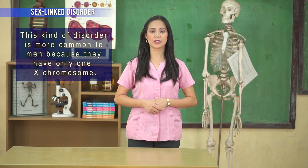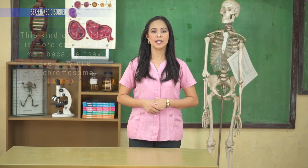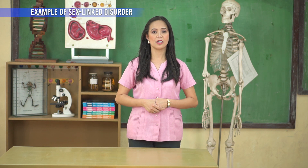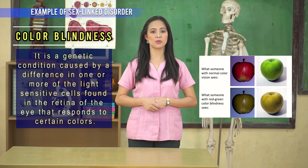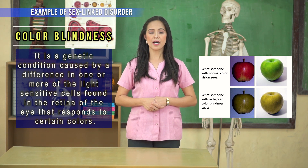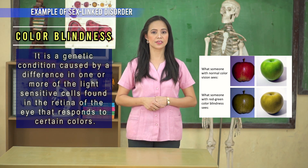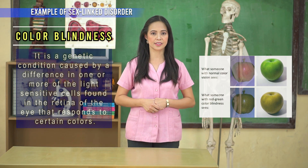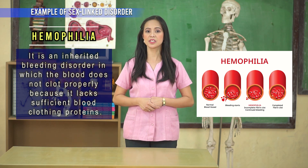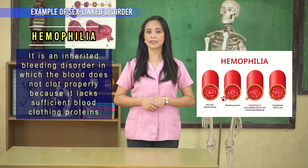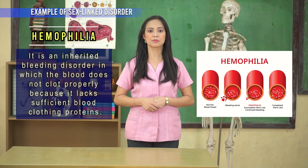The second kind of genetic disorder is the sex-linked disorder. This kind of disorder is more common in men because they have only one X chromosome. Examples of this are color blindness — a genetic condition caused by a difference in one or more of the light-sensitive cells found in the retina of the eye that responds to certain colors — and hemophilia, an inherited bleeding disorder in which the blood does not clot properly because it lacks sufficient blood-clotting proteins.